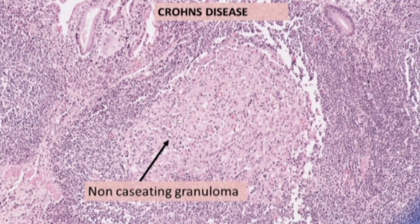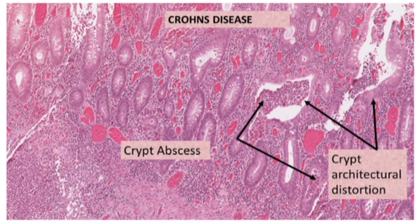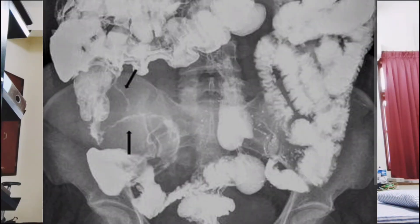Microscopically, the classical finding in Crohn's disease is non-caseating granulomas. You can also see cryptitis and crypt abscesses. On barium scan, you can see the string sign of Cantor (K-A-N-T-O-R), which is a classic barium finding in Crohn's disease.